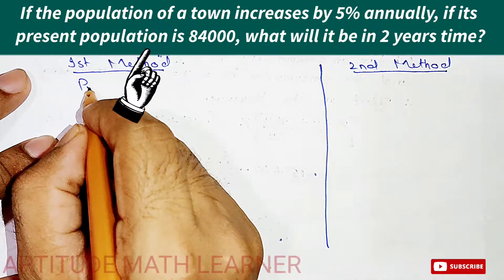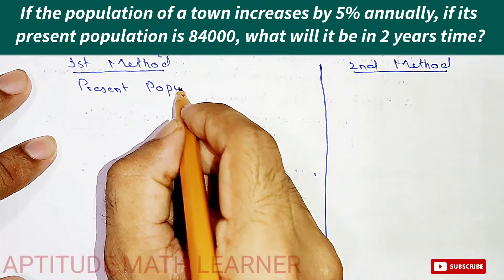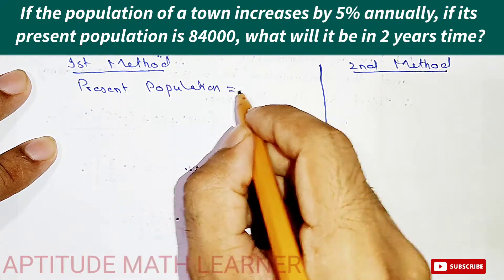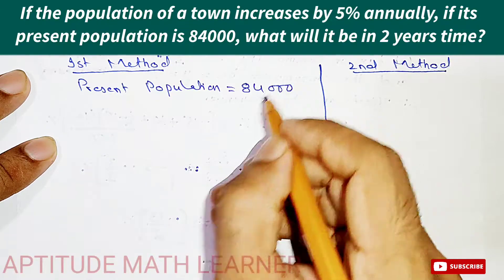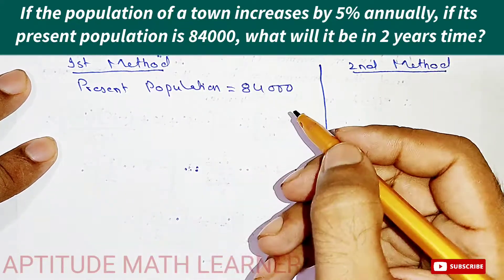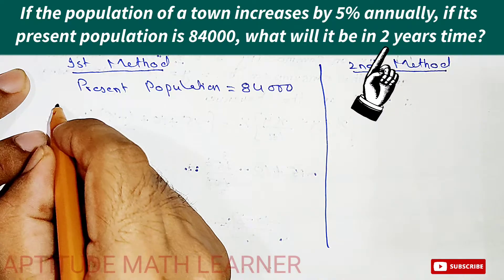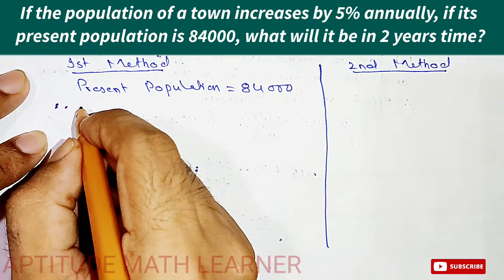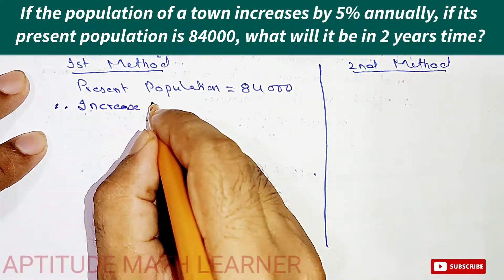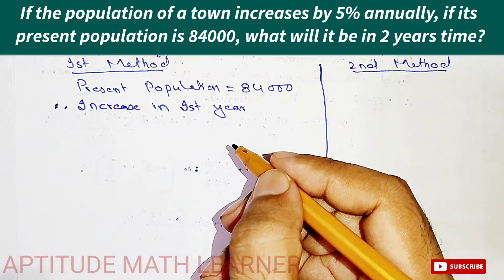In the first method, we take the present population, which is 84,000. We need to find the population after two years, so we calculate the increase in the first year.